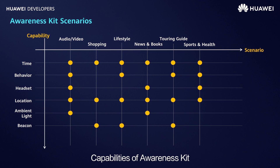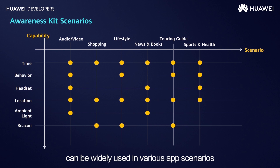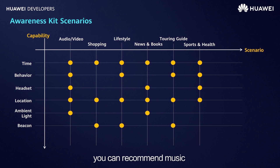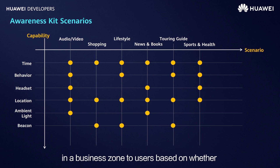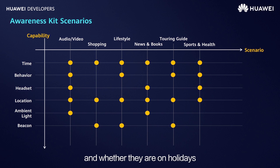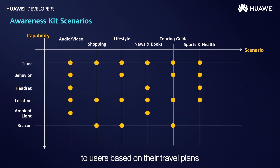Capabilities of Awareness Kit, including time, behavior, headset, location, ambient light, and beacon, can be widely used in various app scenarios. For example, if your app is a music or video app, you can recommend music or video to users based on the current time, whether it is a holiday, and user behavior. If your app is a shopping app, you can recommend services available in a business zone based on whether users have entered the specified area and whether they are on holidays. For travel apps, you can recommend travel information based on travel plans, weather conditions, and holiday information.